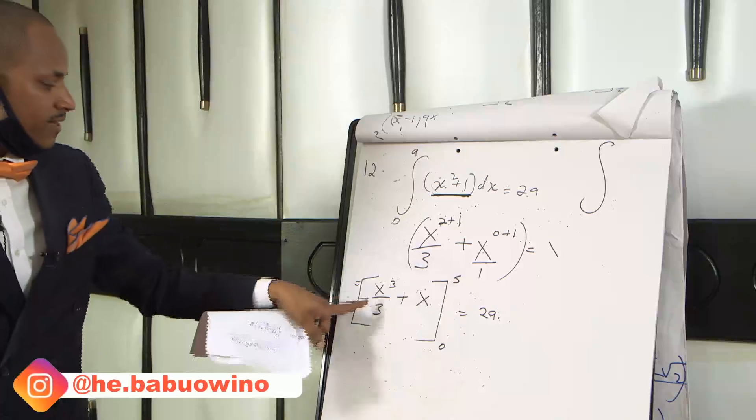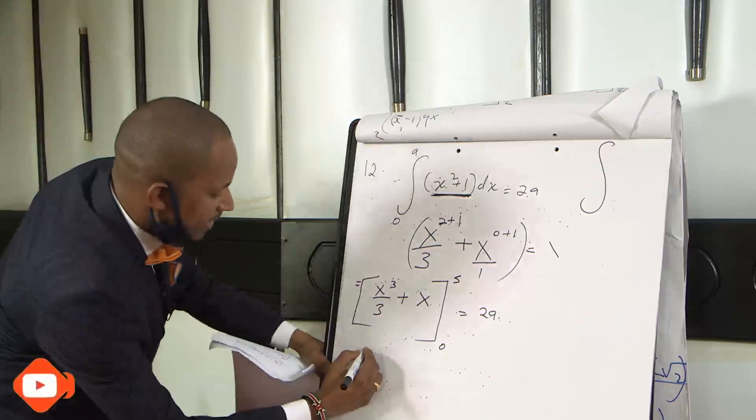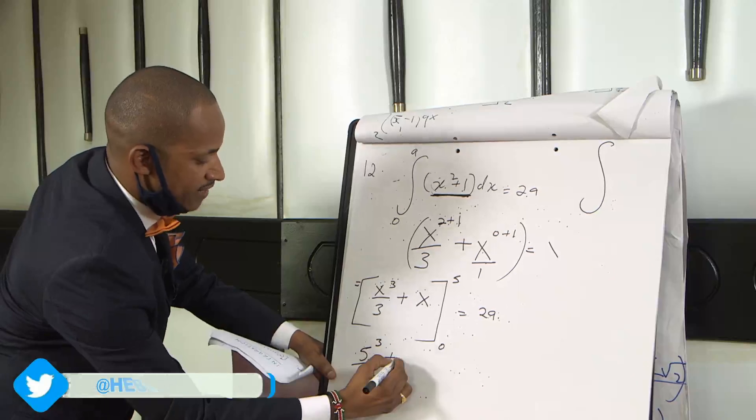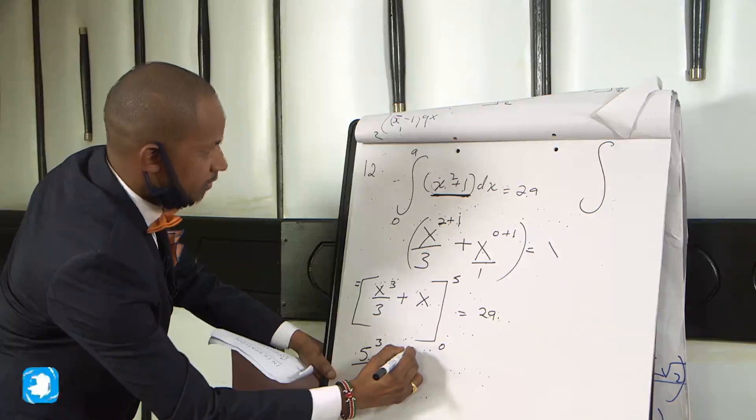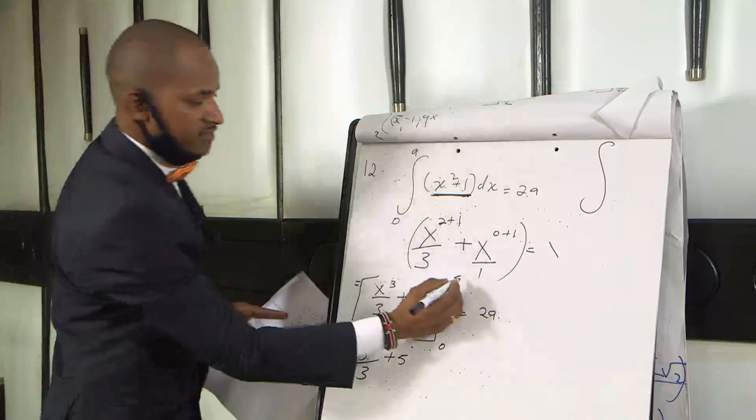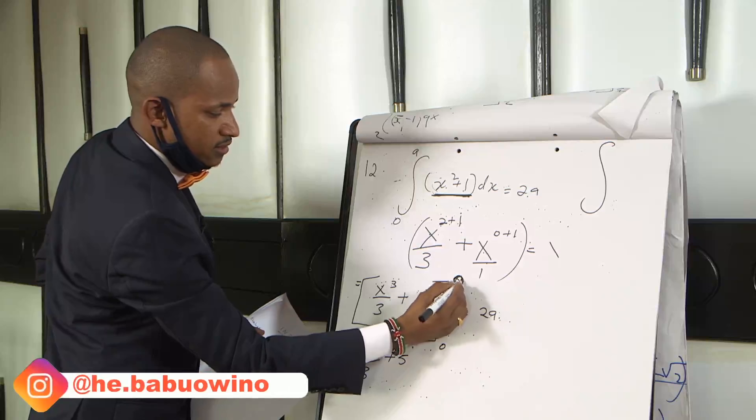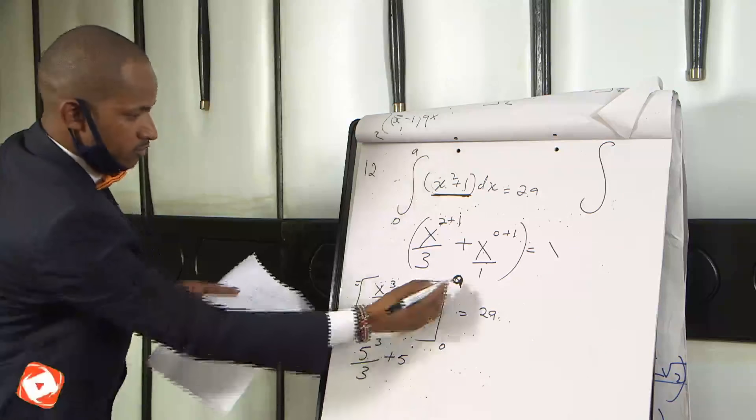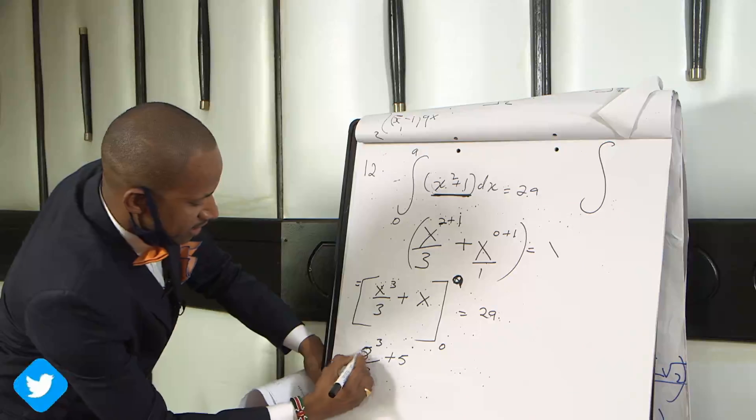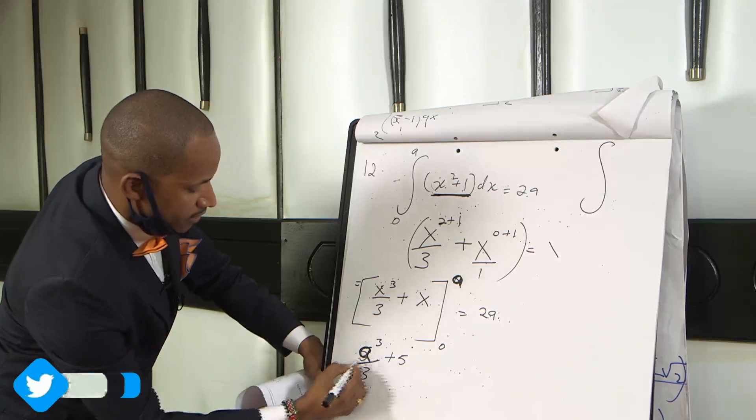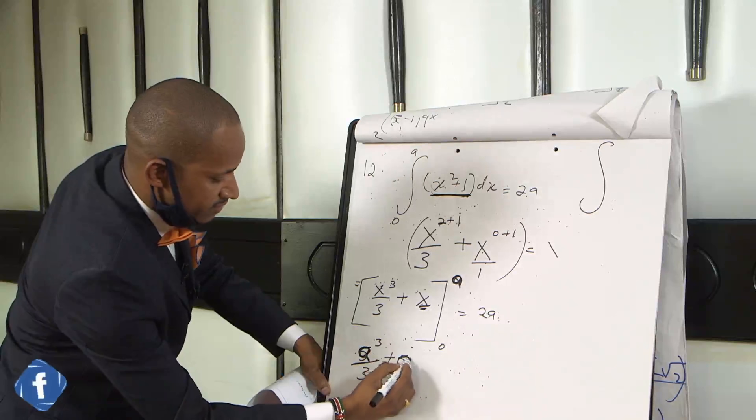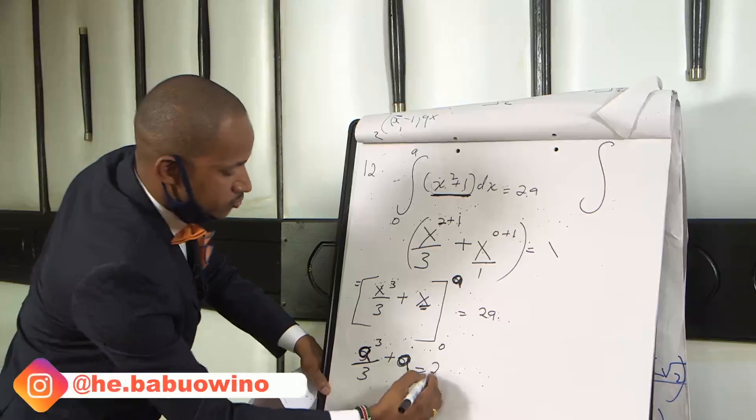Again, just replace where there is x, replace with A. So this becomes A cubed, A raised to power 3, divided by 3 plus A. We are finding the value of A, so where there is x, you write A. So it is A cubed, A raised to power 3 divided by 3 plus A equals to 2A.